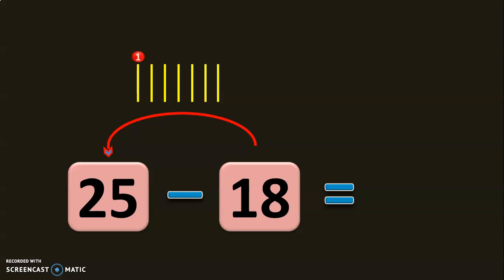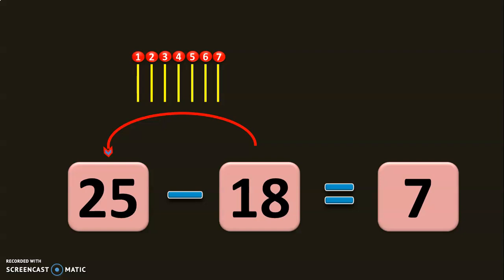That is, we need 1, 2, 3, 4, 5, 6, 7. We need 7 numbers to reach 25 from 18. So the difference between 25 minus 18 is 7.